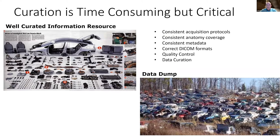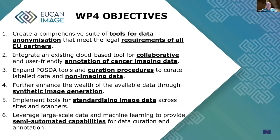If you don't do proper curation, you end up with a data dump. A lot of repositories we've seen are just dumps of data — not well organized, with very little quality control. We need more than a data dump in order to do reproducible research. That's where work package 4 was started.